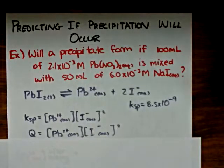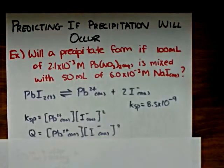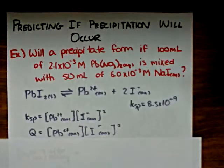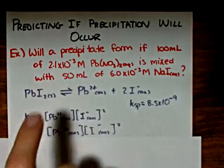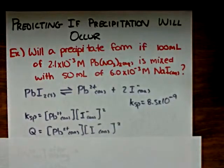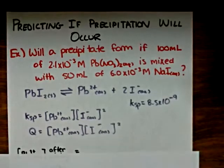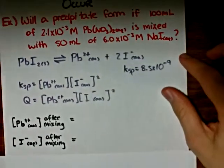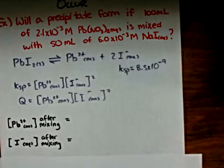The only calculations we really need to do is determine the concentrations of these two ions after mixing. We know they will not be the same as the initial concentrations because the volume of the solutions has changed after they were mixed, which consequently affects the concentration. So we'll calculate the concentration of the lead(II) ions and the iodide ions.